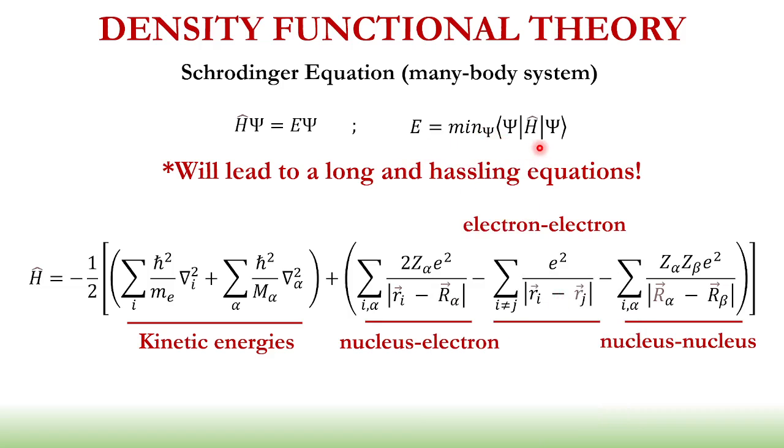However, if we're going to look at the equation of this Hamiltonian operator, it actually leads us to very long and hassling equations. So the Hamiltonian operator is given by this equation, which basically is a summation of these energies. We have here the kinetic energies of our electrons and nucleus, the energies due to our nucleus-electron interaction, and our nucleus-nucleus interaction.